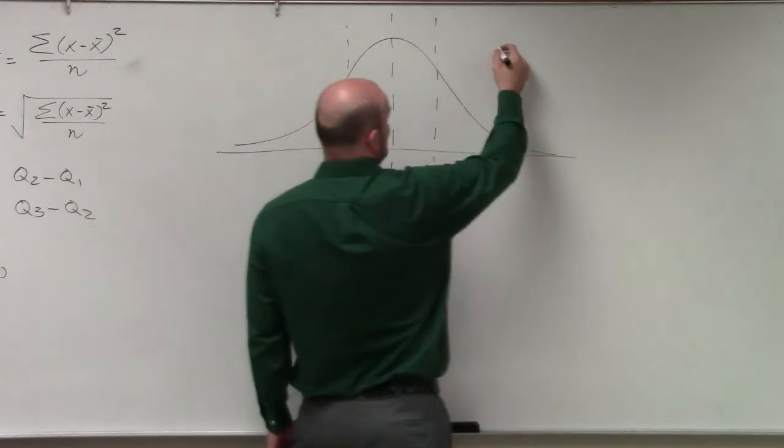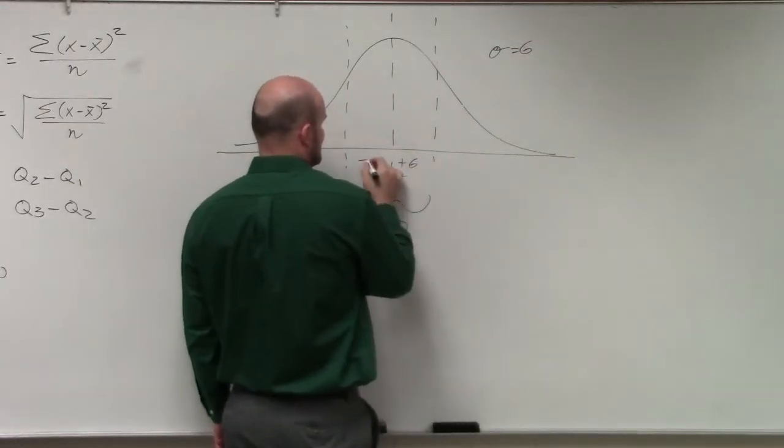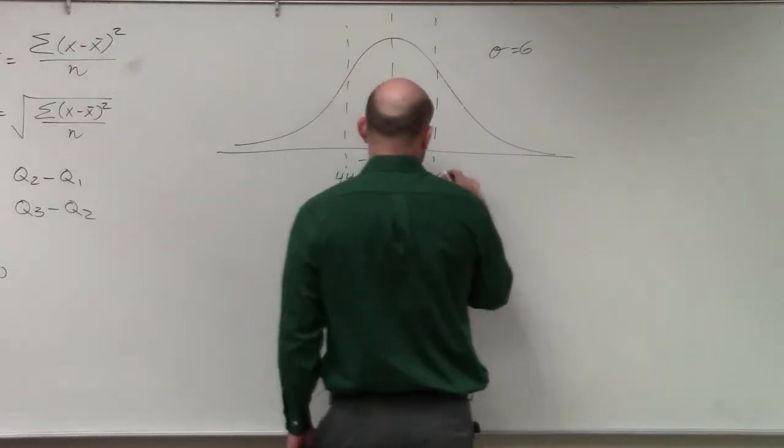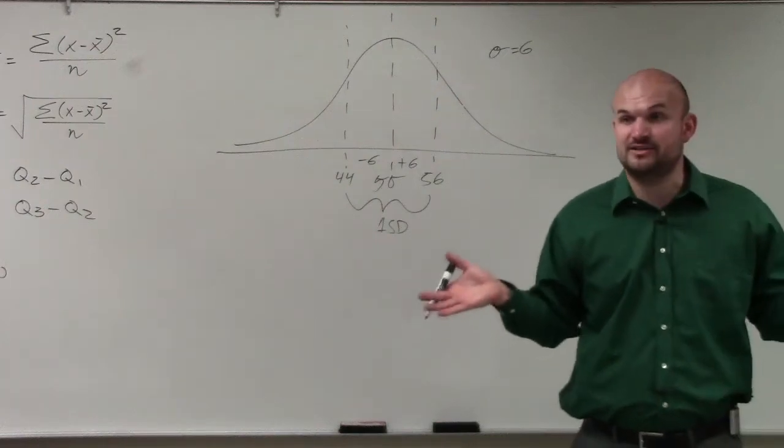So in this case, they say the standard deviation is 6. So if I add 6 and subtract 6, I get 44 and 56. That is the values of the boundaries of my first standard deviation, right?